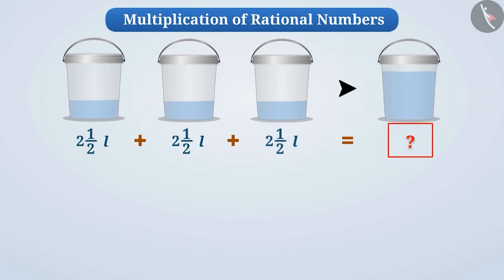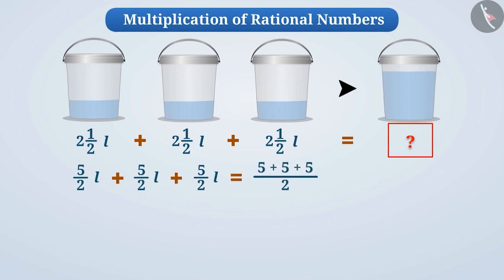Since we write two and a half as five by two, we can also find the result from five by two litres plus five by two litres plus five by two litres. Here, all rational numbers have the same denominator, so we will add the numerators by keeping the denominator the same. This will give us a result of fifteen by two.